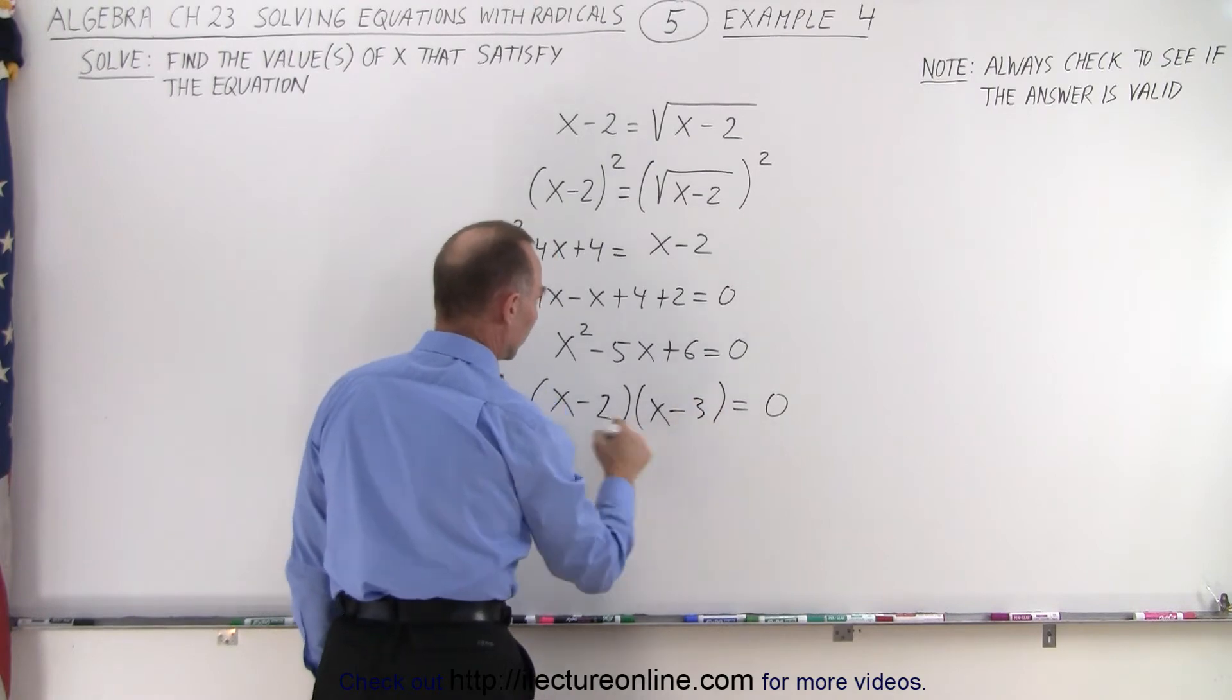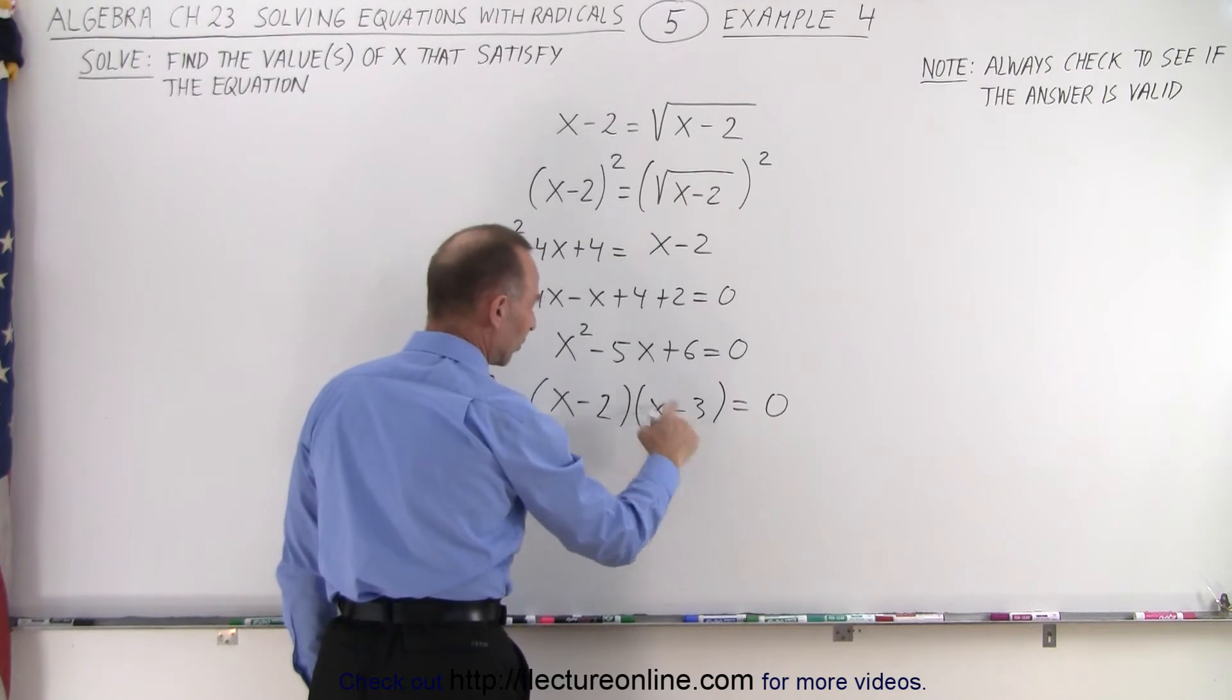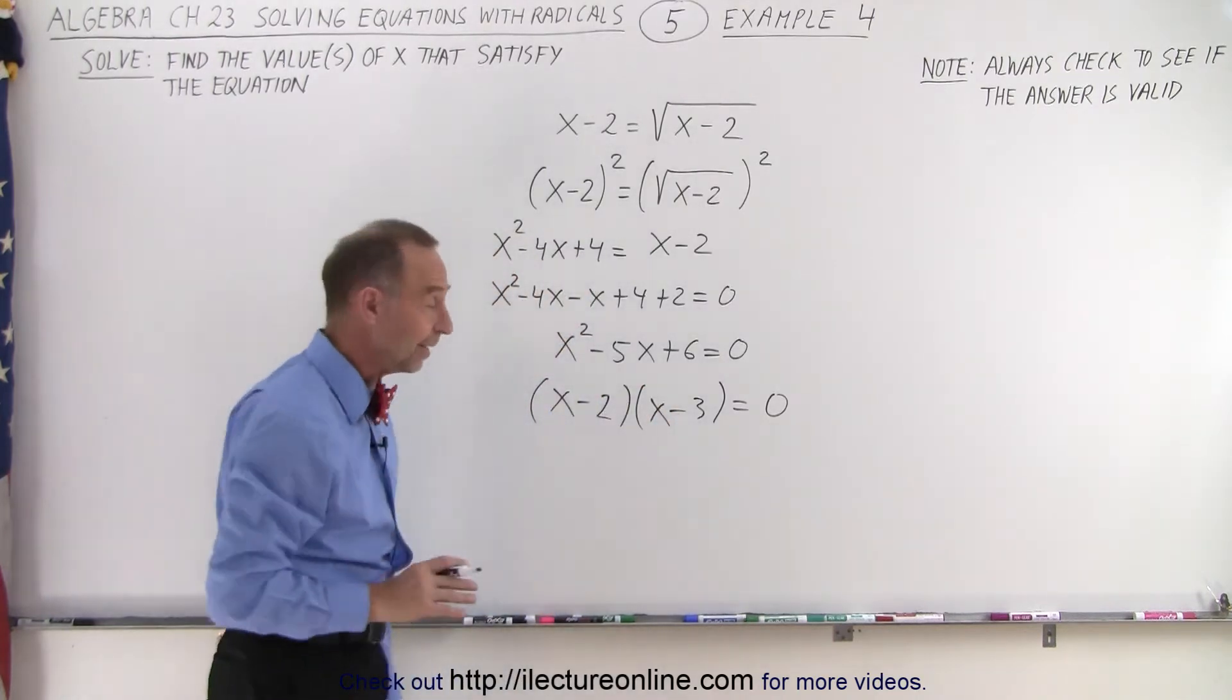So 2 and 3, notice since they're both negative, a negative 2 times a negative 3 is 6. And a negative 2 plus a negative 3 is a negative 5. So that looks like it.